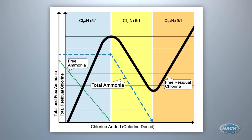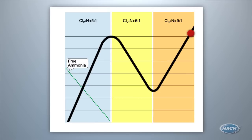So does this change if your utility adds ammonia to water that has already been chlorinated, as many do? The concepts all stay the same. You just move backwards along the line.